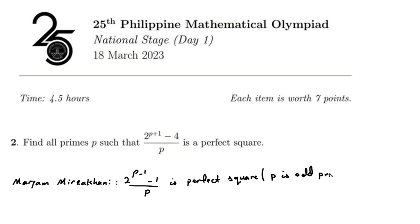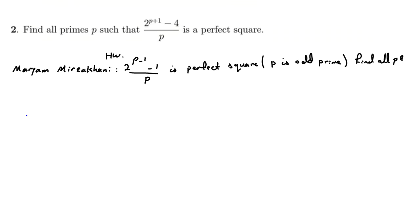Find all such p. I will solve problem number two for you, and by the same method you can solve the related problem as homework. Feel free to comment your answers below this video, or if you have questions, send a message to my WhatsApp number in the description. Now, let's work on this problem: (2^(p+1) - 4) / p is a perfect square, so it equals x².